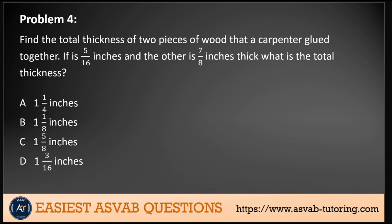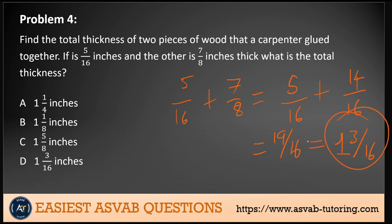Problem 4: Find the total thickness of two pieces of wood a carpenter glued together. If one is 5/16 inches and the other is 7/8 inches, what is the total thickness? All we need to do is add the fractions together: 5/16 plus 7/8. We need a common denominator, so multiply by 2 to get 5/16 plus 14/16, which is 19/16. Converting to a mixed fraction, we get 1 and 3/16. That's our answer, option D.